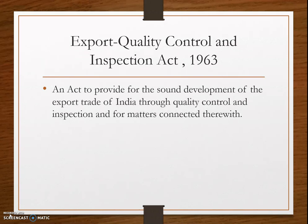The Export Quality Control and Inspection Act 1963 was enacted to provide for the sound development of the export trade of India through quality control and inspection. It was enacted to strengthen the export trade through quality control and pre-shipment inspections. The act prohibits the export of substandard goods as well as products which do not fulfill the requirements. For smooth operation of this act, the government established the Export Inspection Council in 1964.